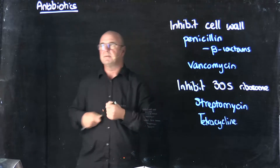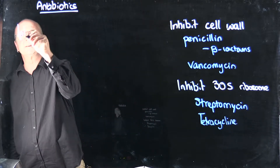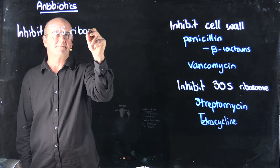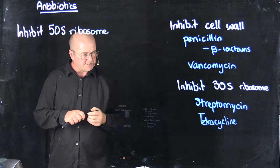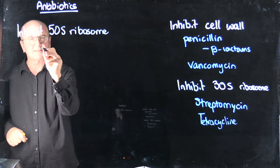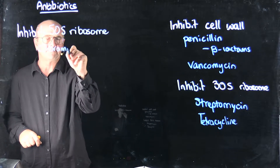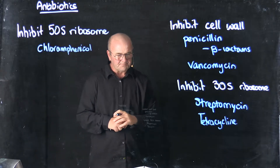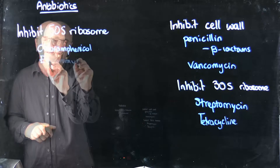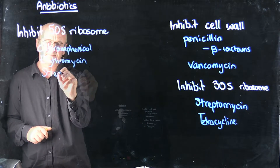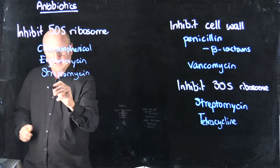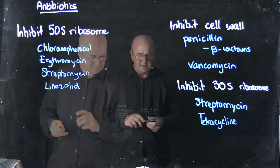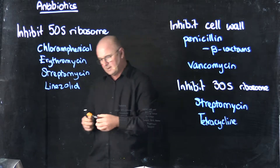In addition to the 30S, we also have the 50S, and we can inhibit the 50S ribosomal subunit. A couple of the antibiotics that inhibit the 50S include chloramphenicol, which is a pretty common antibiotic, erythromycin, and one of the newer ones, linezolid. We can also inhibit DNA synthesis.